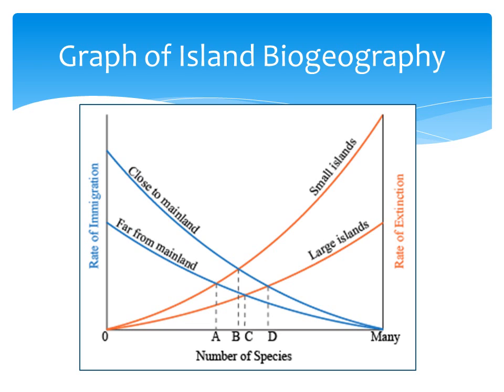The rate of extinction goes up as the number of species goes up. More and more species mean more and more competition for resources, and so more chances of going extinct. If you look at the two blue lines showing the rate of immigration, one represents islands that are close to the mainland, which have a higher rate of immigration, and the other represents islands that are far from the mainland, which have a lower rate of immigration. Looking at the two red lines showing the rate of extinction, the upper line represents small islands, which have a higher rate of extinction, and the lower red line represents large islands, which have a lower rate of extinction.